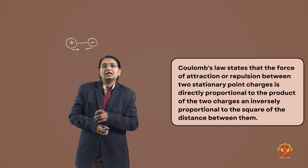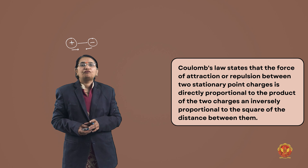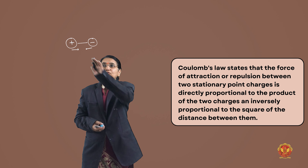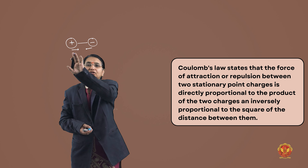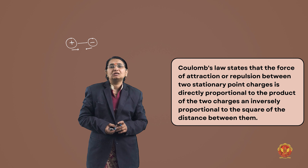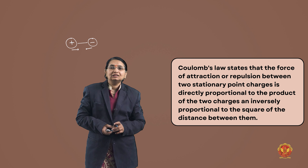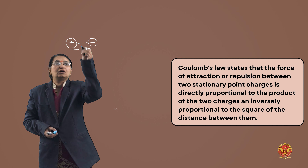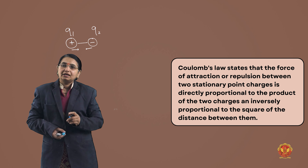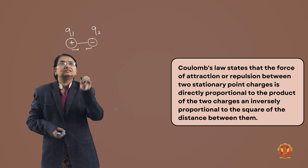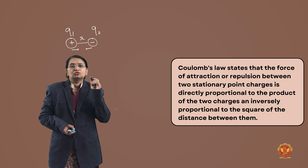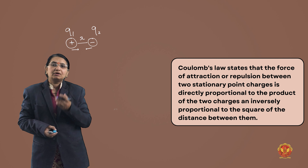The force of attraction or repulsion between two stationary point charges is directly proportional to the product of the charges and inversely proportional to the square of the distance between them. If we consider the two charges to be Q1 and Q2, we can write Coulomb's Law.